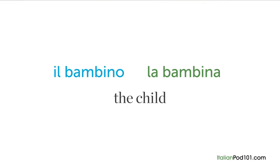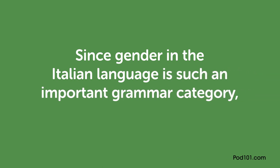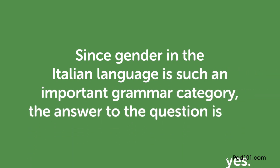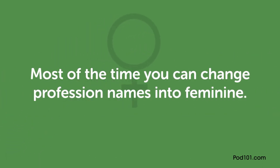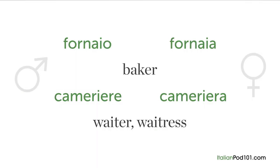Since gender in Italian language is such an important grammar category, the answer is yes — most of the time you can change profession names into feminine. Professions ending in -aio and -iere change the ending to -aia and -iera: 'fornaio' → 'fornaia' (baker), 'cameriere' → 'cameriera' (waiter/waitress). Professions ending in -tore change the ending to -trice: 'attore' → 'attrice' (actor/actress).